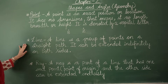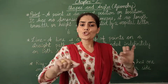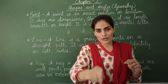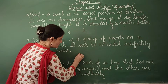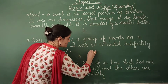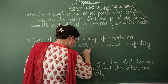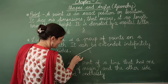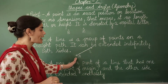What is a line? A line is a group of points on a straight path — either horizontal or vertical. So let's draw two points here: point A and let's say point S. And if I join these two points, what do I get? I get line AS.